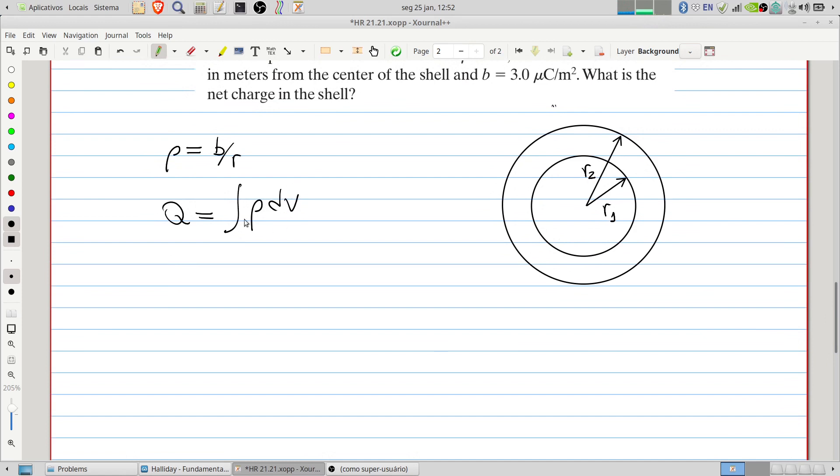Therefore, it's necessary to write the infinitesimal volume. The volume of one spherical object will be 4π divided by 3 r to the third.